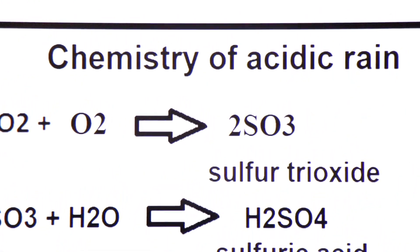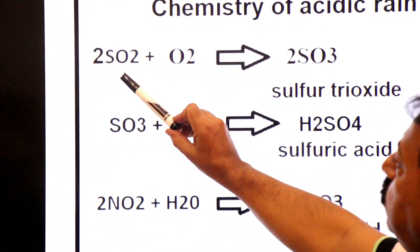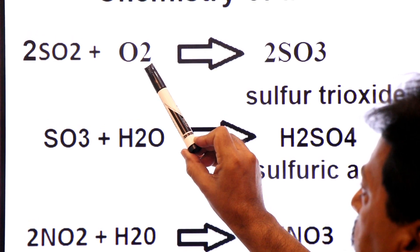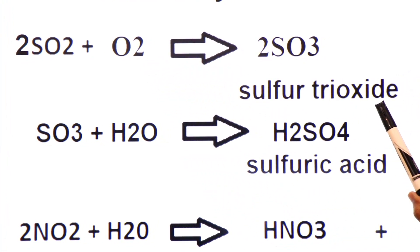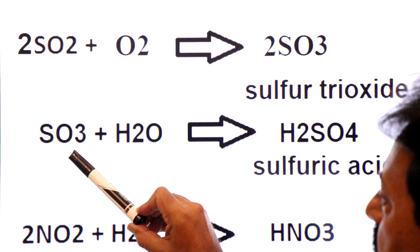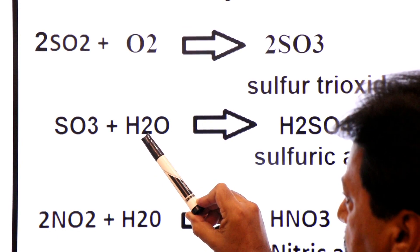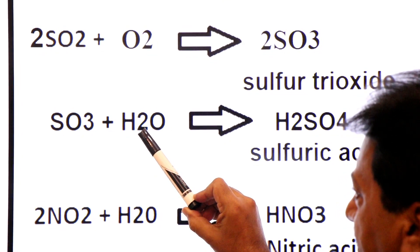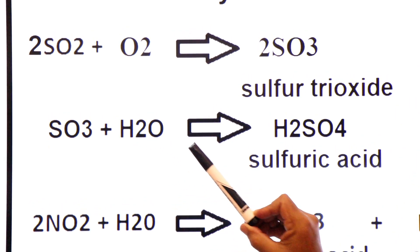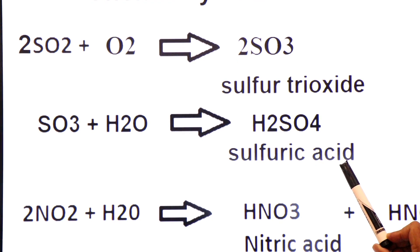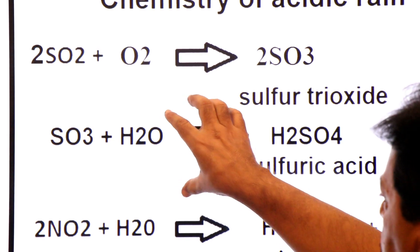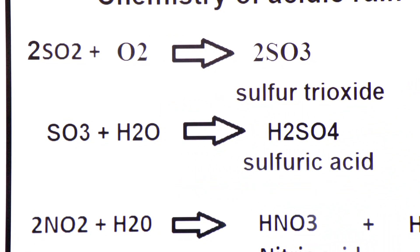What is the chemistry of acidic rain? Two molecules of sulfur dioxide combine with molecular oxygen to form sulfur trioxide. So in the first step, sulfur trioxide is formed. When sulfur trioxide combines with the tiny droplets of water in clouds — when sulfur trioxide mixes up with the water of clouds — it creates an acid called sulfuric acid, H2SO4. In this way, sulfuric acid is formed in clouds from the combination of sulfur trioxide and water.